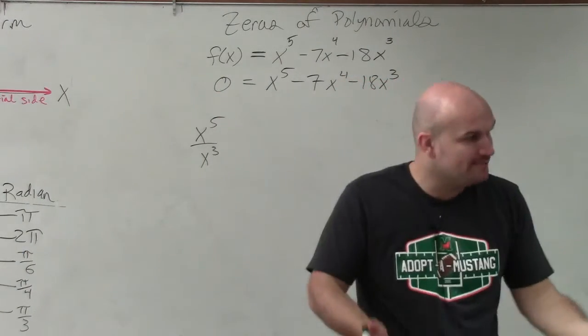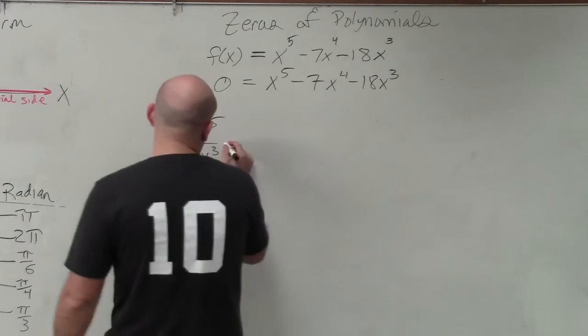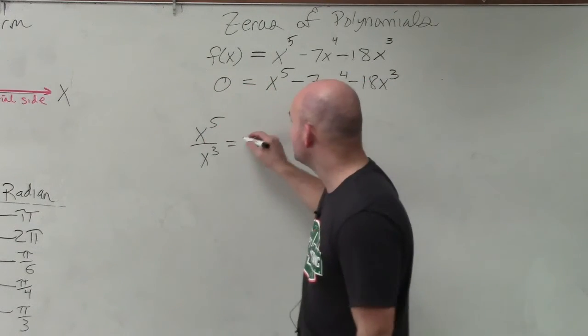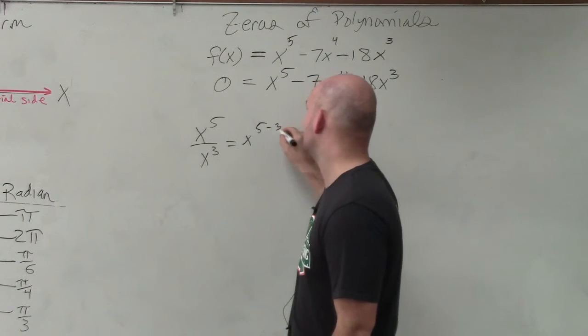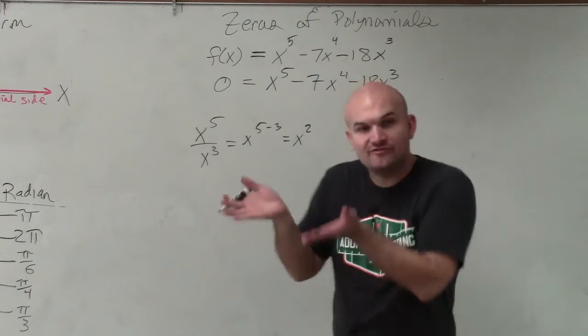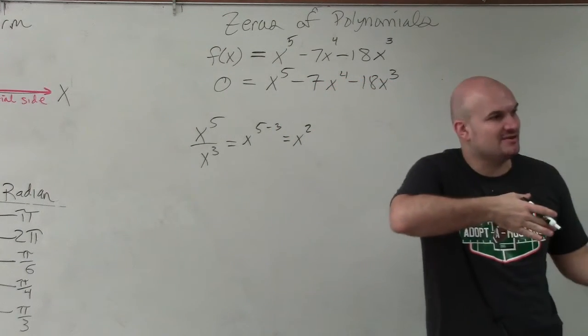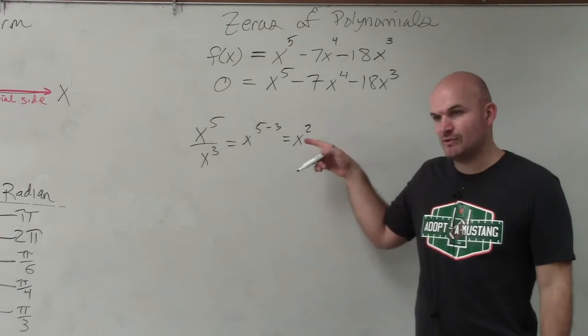Well, in algebra 1, you guys remember, we're going to go back over this. But when you're dividing, you subtract the powers. So when you factor out an x cubed from an x to the 5th, you're left with an x squared. OK?